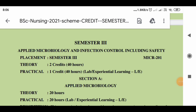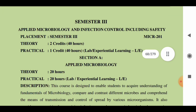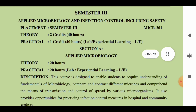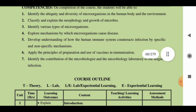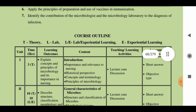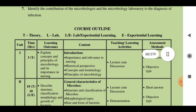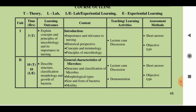Let us discuss semester 3 in detail. The first subject is Applied Microbiology and Infection Control including Safety. You have two credits, that is 40 hours. In the Applied Microbiology section A, you have 20 hours of theory and 20 hours of practical. The course outline is given below.